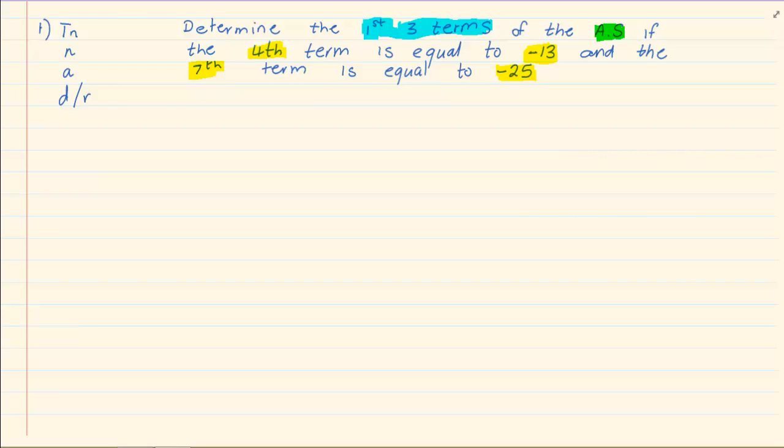Now look at the information you are given. If we are working with the fourth term which is equal to negative 13, you are going to start by writing down your TN, N, A and D. What information do we have here? We have that TN is equal to negative 13, and we know that N at that specific point is equal to 4. But we don't have A and D.